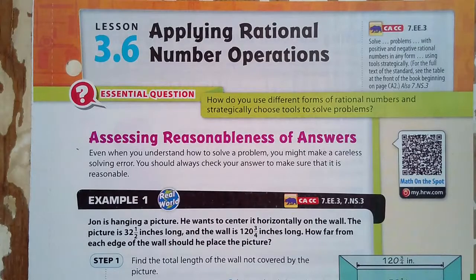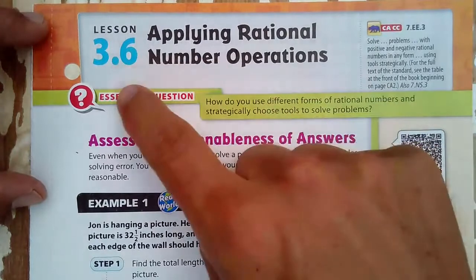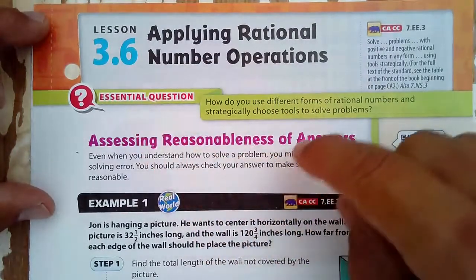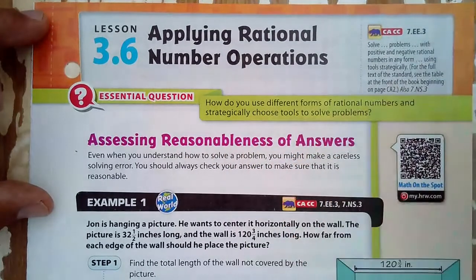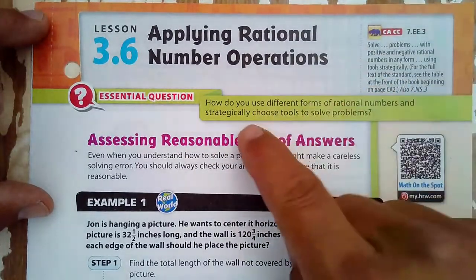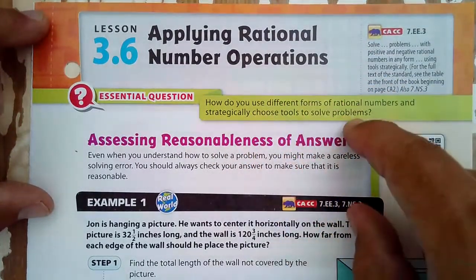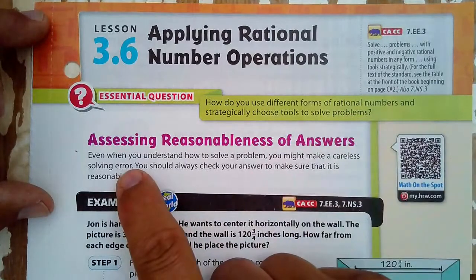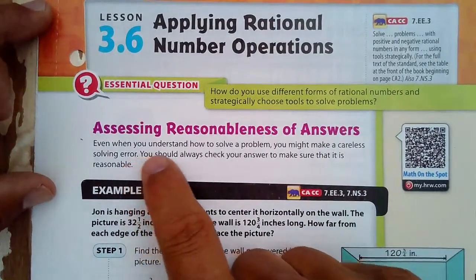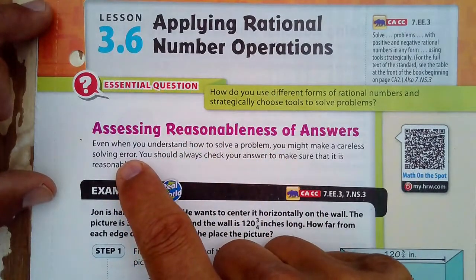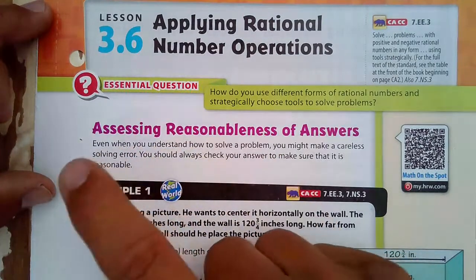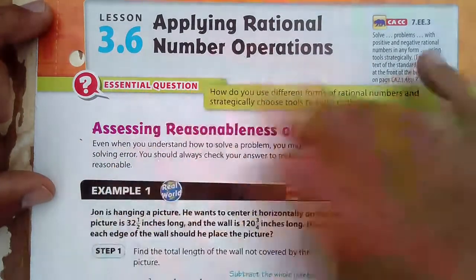Alright, welcome to applying rational number operations, lesson 3.6. We're going to be discovering this essential question: how to use different forms of rational numbers and strategically choose tools to solve problems. Even when you understand how to solve a problem, you might make a careless solving error. I'm sure we've all been there. You should always check your answer to make sure that it's reasonable.